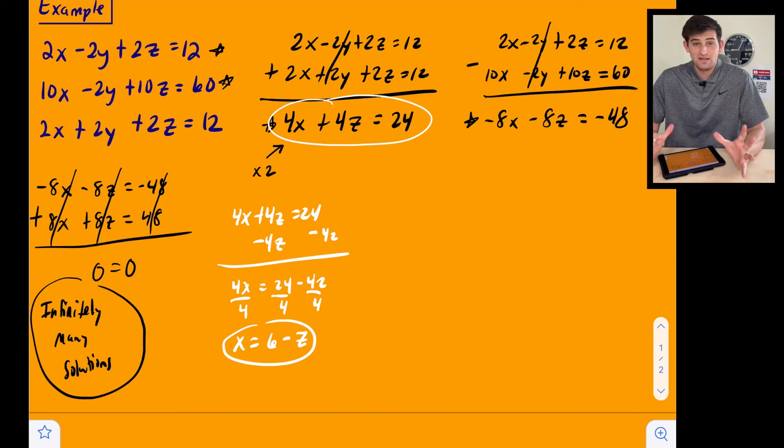So x could be anything equal to 6 minus z, right? Anything we want to plug in for z. So now since we have x is equal to 6 minus z, we can take that...